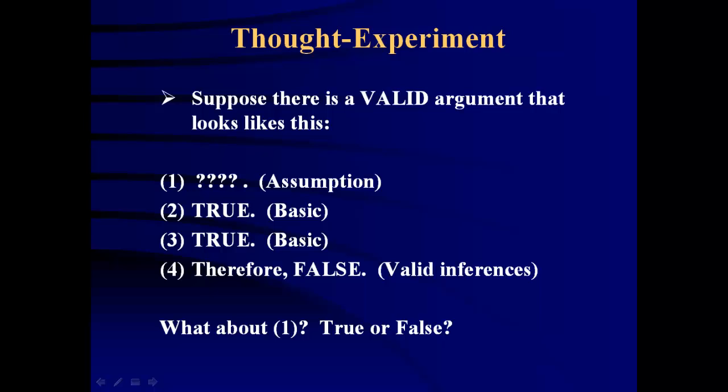Given that, what about one premise? True or false? It's going to be false if it's impossible for all of the premises to be true while the conclusion is false. When there's a valid argument, this really brings into sharp relief that at least one premise is false. And this is the signature feature of both the Reductio argument strategy as well as the Indirect Proof argument strategy.